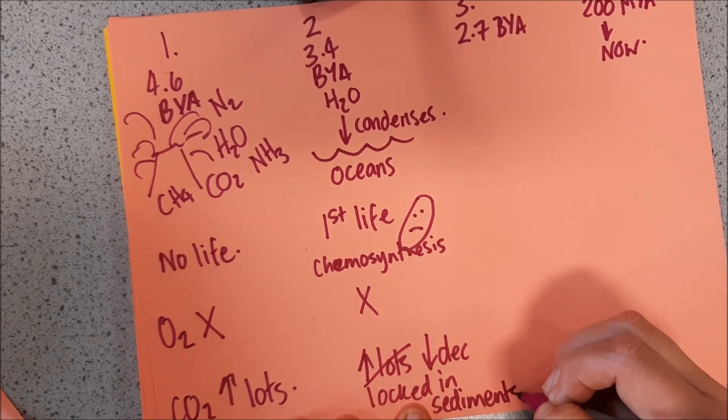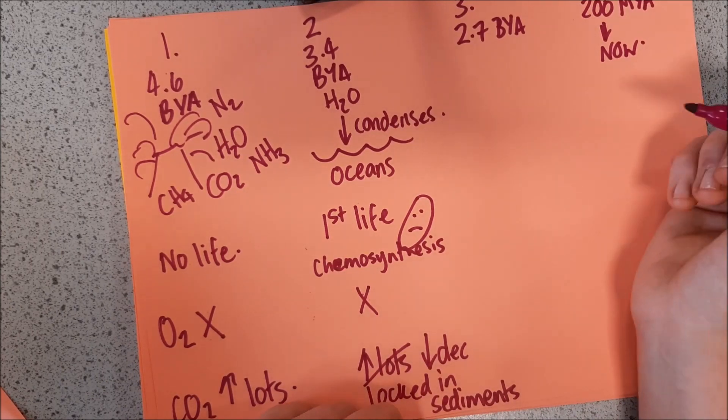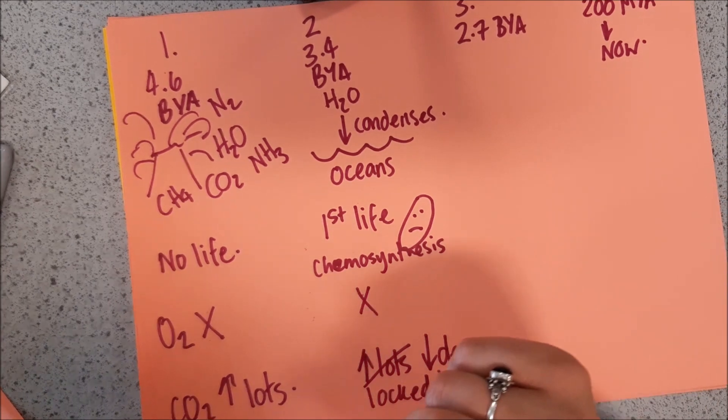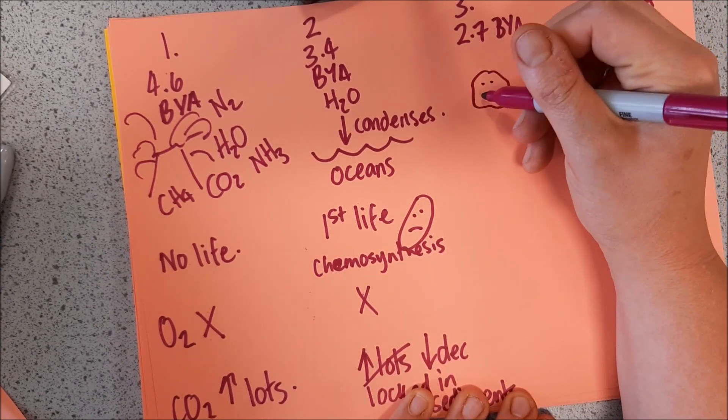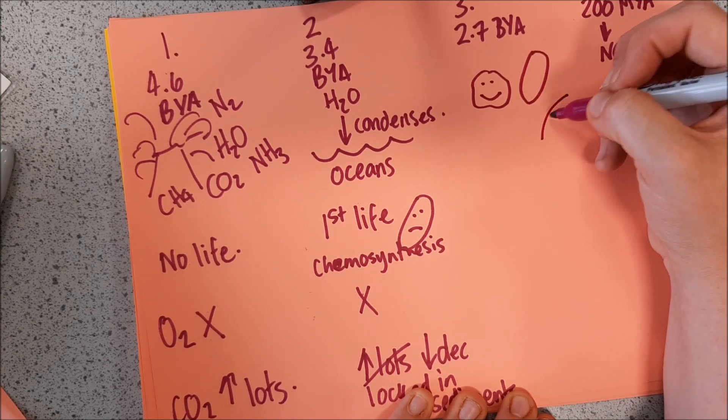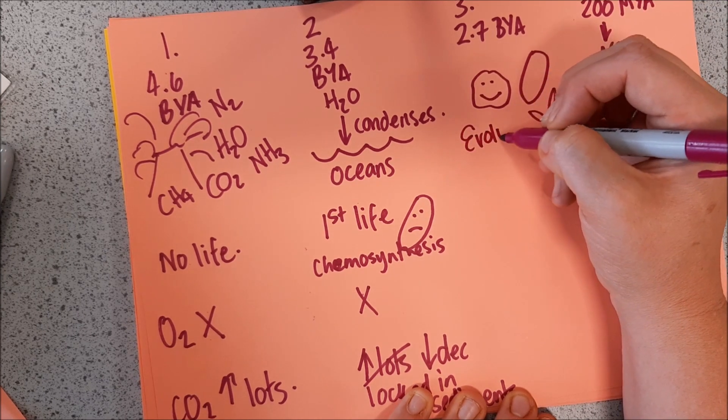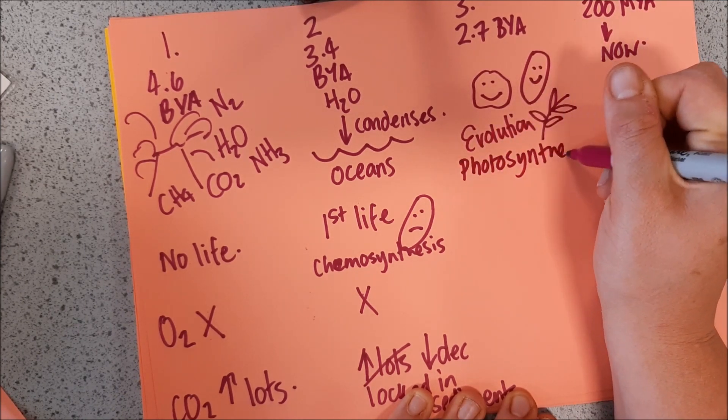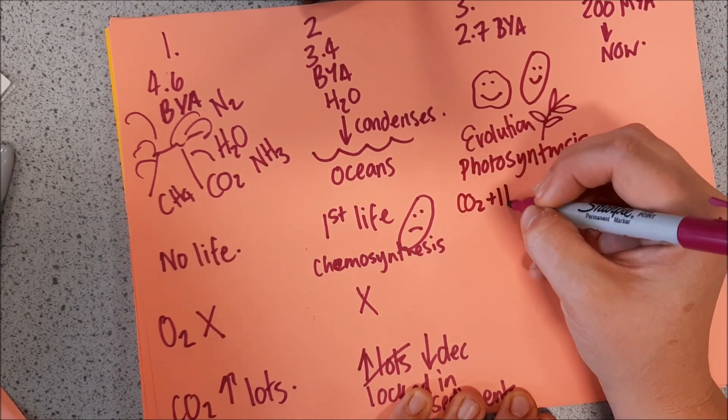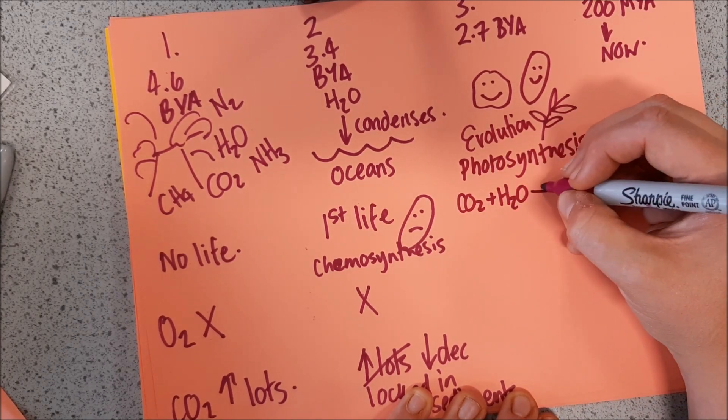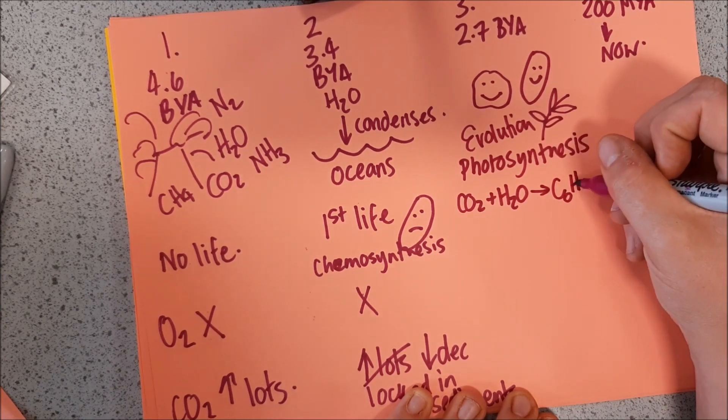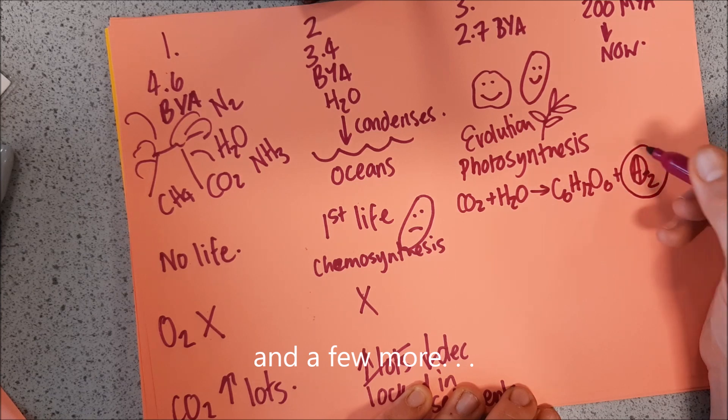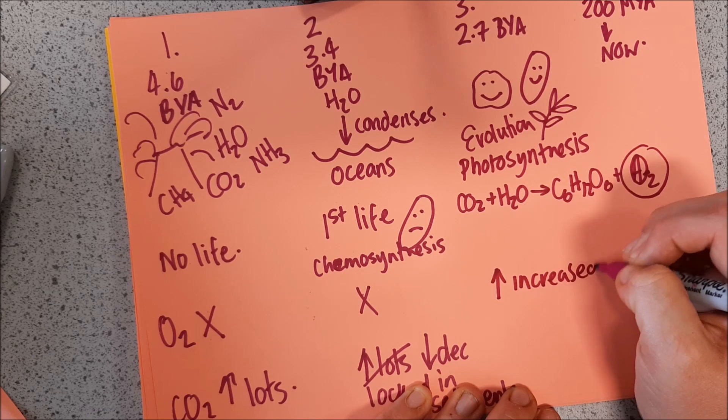Now starts to kick off 2.7 billion years ago, because this is when we have the first bits of life and other simple organisms evolving. So we've now got things like algae and bacteria. And we've also now starting to get some plants. So we've got evolution of organisms. And these organisms tend to do photosynthesis. Now this photosynthesis, of course, is taking that carbon dioxide out of the atmosphere, reacting it with water in cells to create glucose and oxygen. And so this is the first time we've now got increased oxygen in the atmosphere due to photosynthesis.